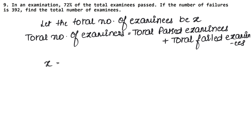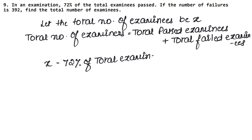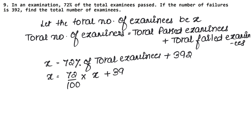Total past examinees — it says 72% of total examinees passed. So, 72% of total examinees, plus total number of failures, which is 392. So: X = 72% of X + 392. That means X = (72/100) × X + 392.